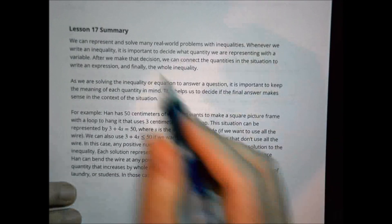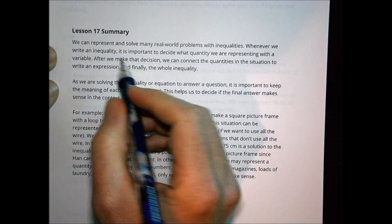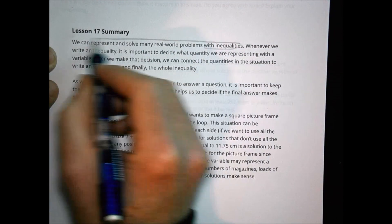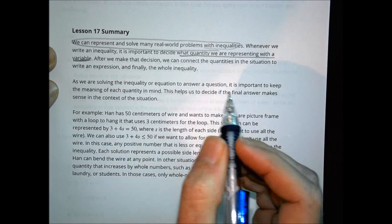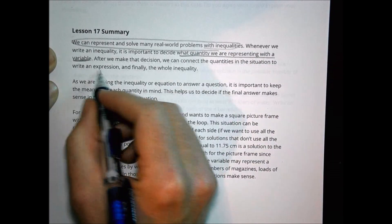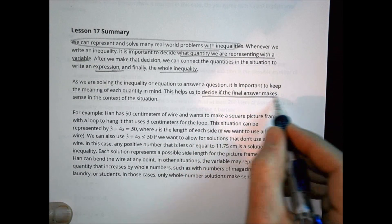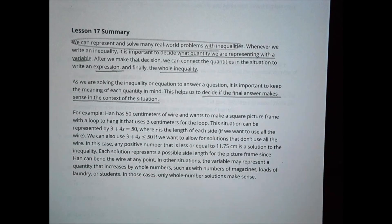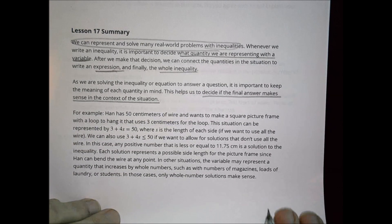The summary today is that we can represent many real-world problems with inequalities. Whenever we write an inequality, it's important to decide what quantity we're representing with a variable. We can connect quantities in the situation to write an expression and finally a whole inequality. But the big thing here is we have to decide if the final answer makes sense in the context of the situation. Does it actually make sense? Think about does it make sense logically.